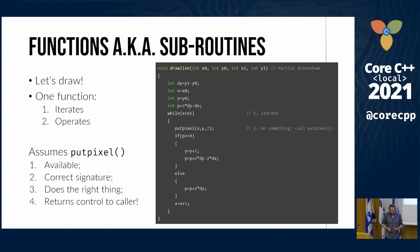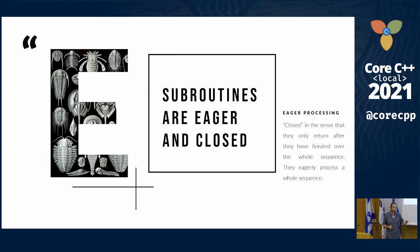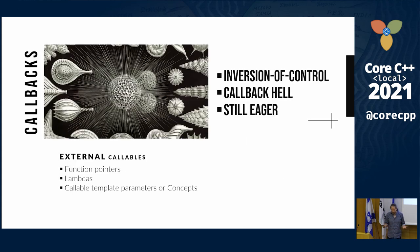If we look at what's common between these two apparently very dissimilar functions, we can see they have two properties common to regular subroutines. First of all, they're eager — they do not return until they process all of the elements in the sequence. And the other one is that they're closed. When I say closed, I mean that they perform a predefined operation over the whole sequence, or over each element of the sequence. This may be sufficient for certain cases, but it limits the way or makes us have to write sometimes a lot of functions which are essentially doing the same thing logically, but maybe we don't want eager and closed.